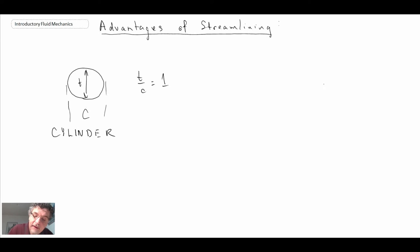If we have an airfoil, I'm going to try to draw a symmetric airfoil. The thickness would be somewhere here. The chord is the length of the airfoil. Let's say this airfoil has a t over c of 0.15. NACA 0015 would be an example.